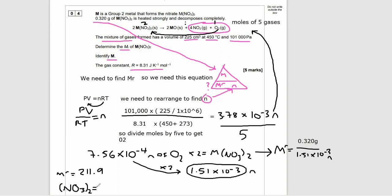NO3 times 2: 3 oxygens are 48, plus nitrogen 14 is 62 times 2, that's 124 for the MR of the NO3 with a little 2 outside. Take the 211.9, subtract the 124, and we're going to get the MR of metal M, and that is 87.9. If we look that up in the periodic table, it's going to be strontium. Identifying our metal M is strontium, the group 2 metal.